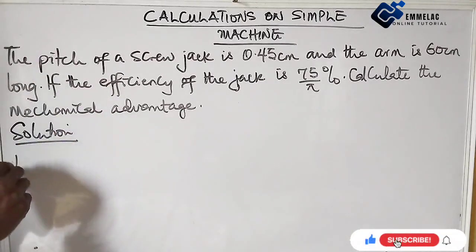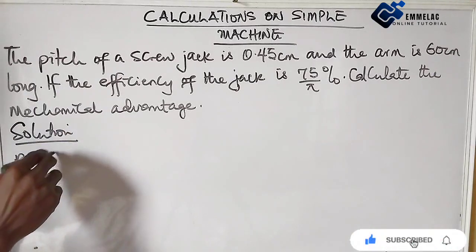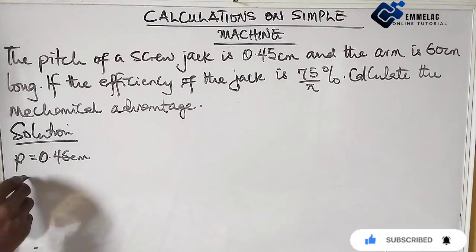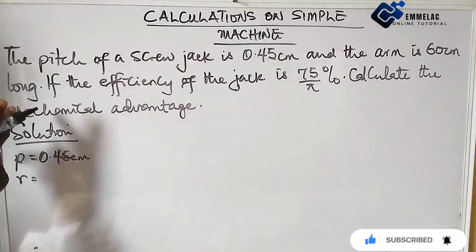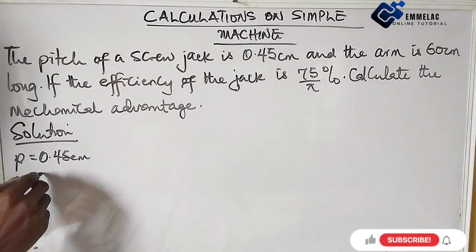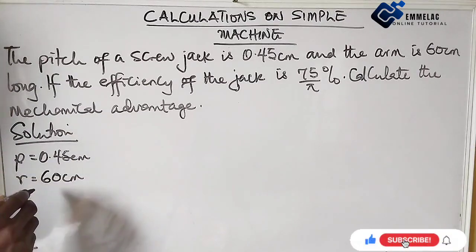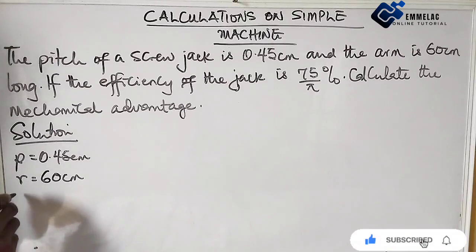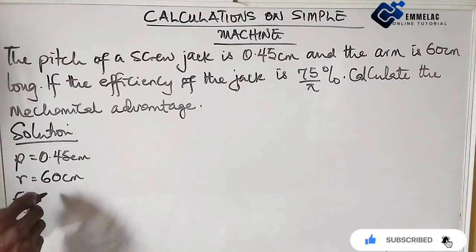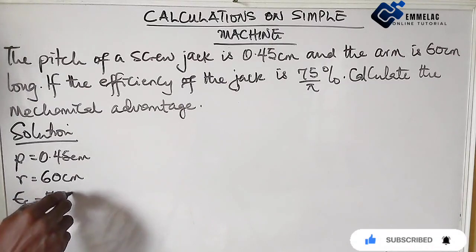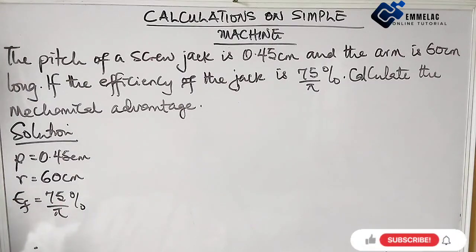Now the pitch p is given as 0.45 centimeters. The radius, which is the arm of the screw jack, is given as 60 centimeters. And the efficiency is given as 75 over π percent.